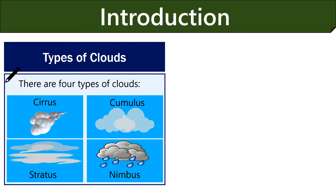Now we will discuss the four common types of clouds based on their shape. Cirrus clouds are thin, wispy and often curved. Cumulus clouds appear like big and fluffy cotton balls. Stratus clouds appear as flat sheets of clouds. Nimbus clouds appear grey and dense and they produce rain and snowfall.